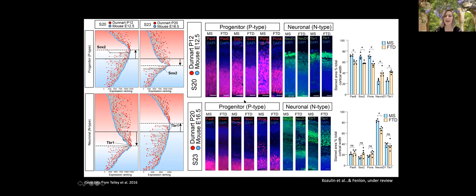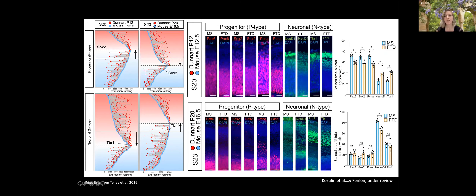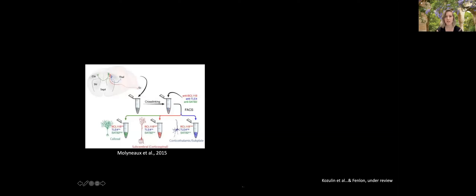At the early stage, progenitor-type genes were more enriched in mouse and less in dunnart, while neuronal-type genes were more enriched in dunnart and less in mouse. This trend clearly inversed at the later developmental stage. We confirmed this with immunohistochemistry using canonical markers of progenitor or neuronal-type cells, and saw a larger proportion of the cortex dedicated to these different cell types — painting an overall picture where the maturity context of the cortex was quite different between species at matched stages.